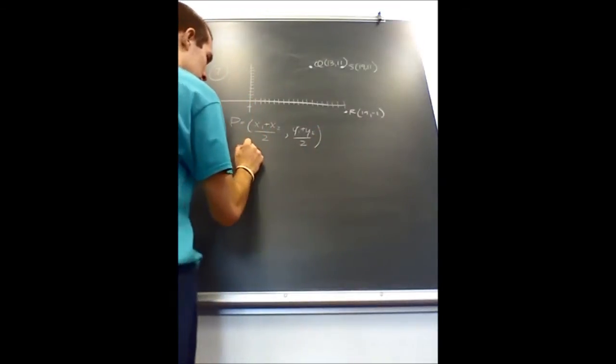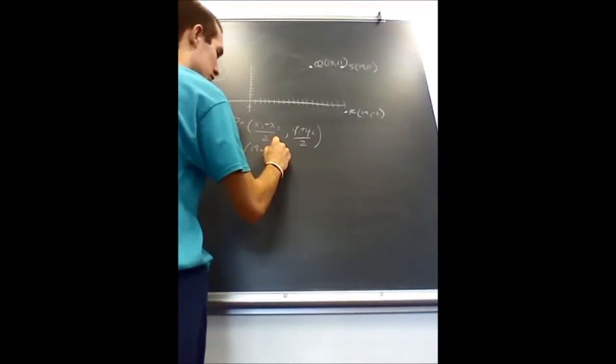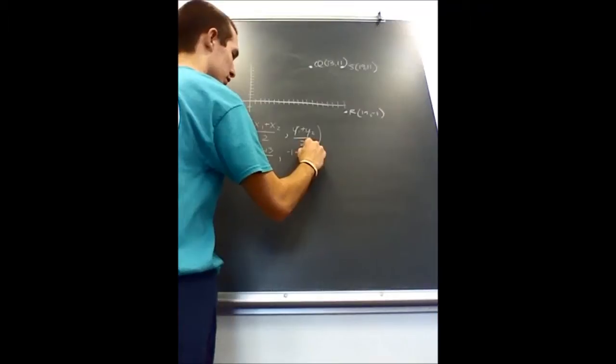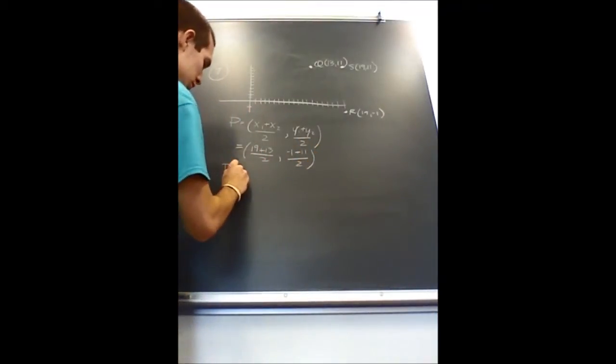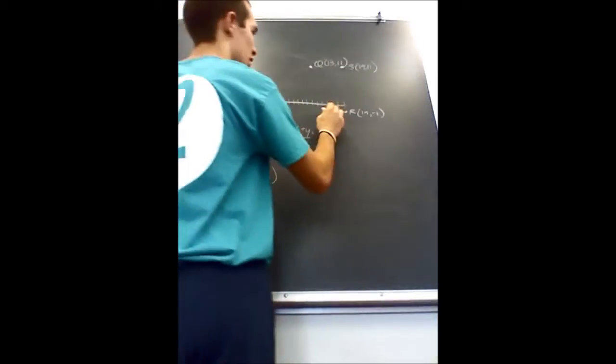Which would mean P is equal to 19 plus 13 over 2, comma, negative 1 plus 11 over 2, which means point P, which is the center of your circle, is 16, 5. And then I would plot that.